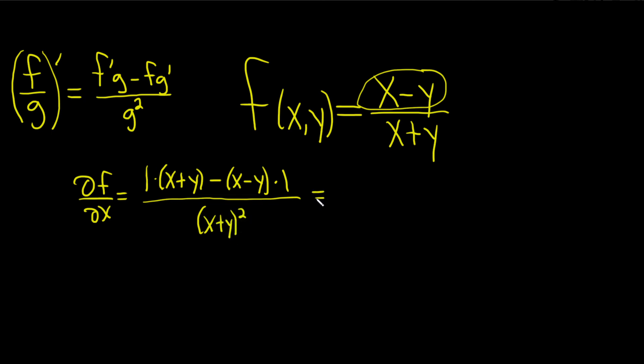So this is equal to, let's see, it looks like the x is canceled. And so we get y minus negative y over x plus y squared, just like that.